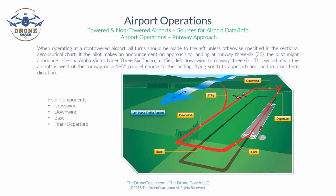When operating at a non-towered airport, all turns should be made to the left unless otherwise specified in the sectional chart. If a pilot makes an announcement on approach to landing at runway 36, the pilot might announce: 'Cessna alpha victor niner 36 tango, midfield left downwind to runway 36.' This would mean the aircraft is west of the runway on a 180-degree parallel course, flying south to approach and land in a northern direction.